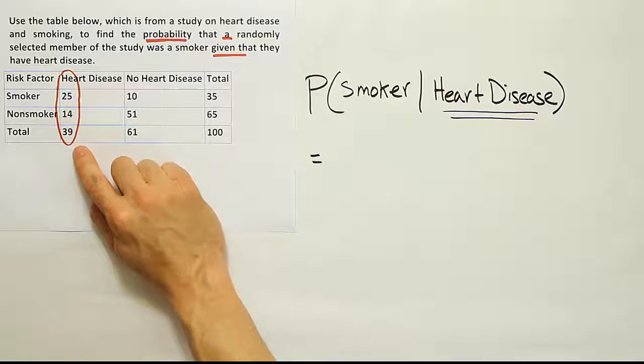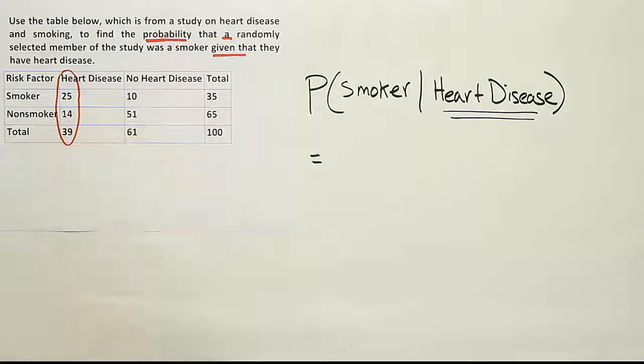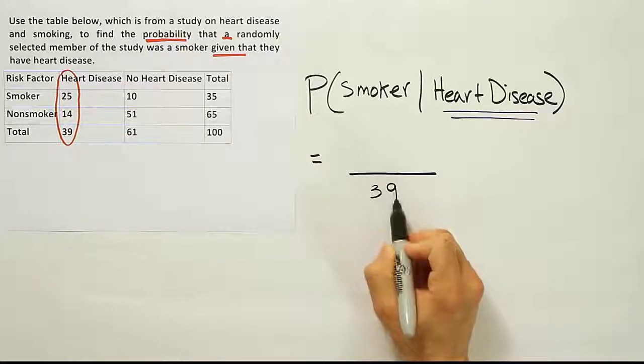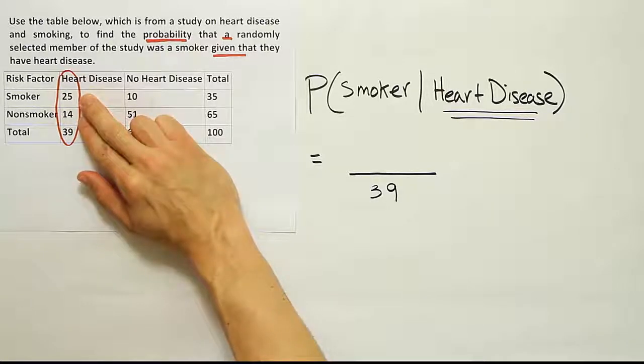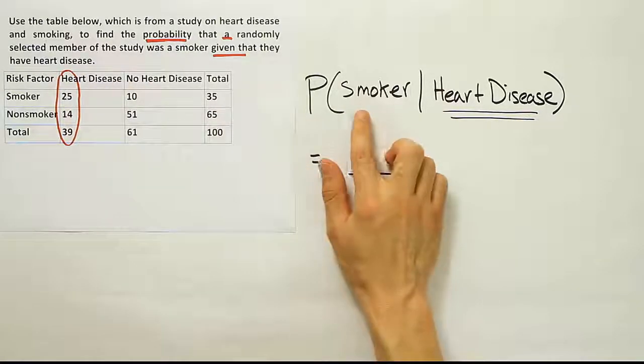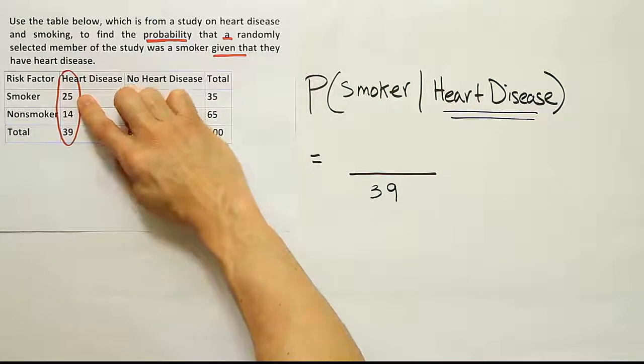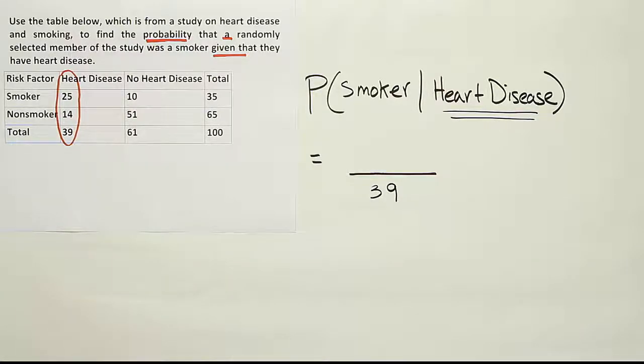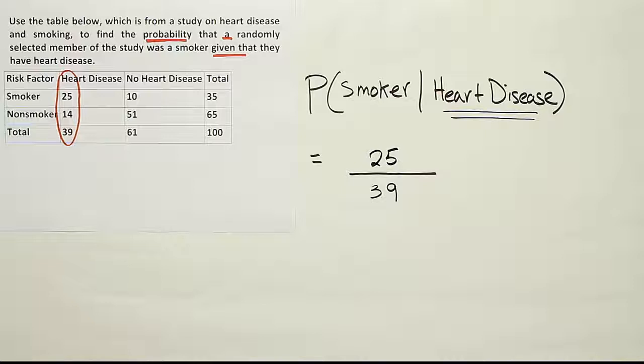What we want to do for the shortcut method is look at the numbers you circle and notice that the total will always be your denominator. You're going to want to start out with that number 39 as your denominator. Then look at the remaining two numbers and ask which corresponds to the group who were smokers. We have 25 and 14. 25 is clearly the number that corresponds to smokers, so we put that at the top. That is our fraction: 25 divided by 39.